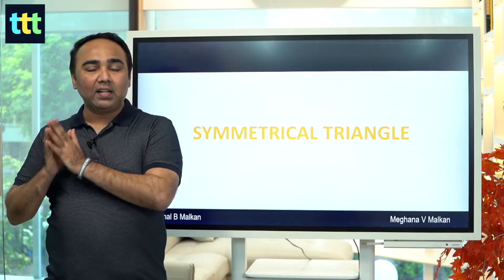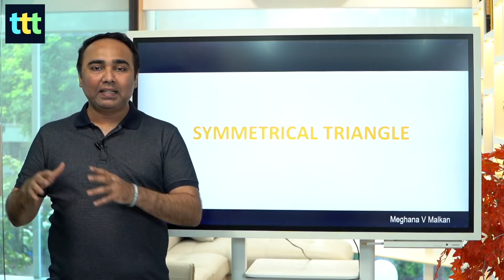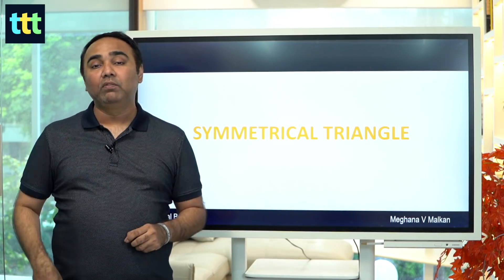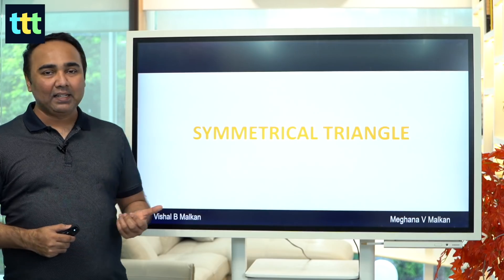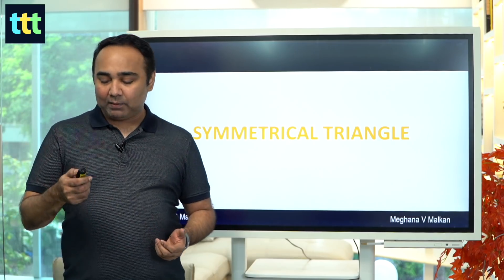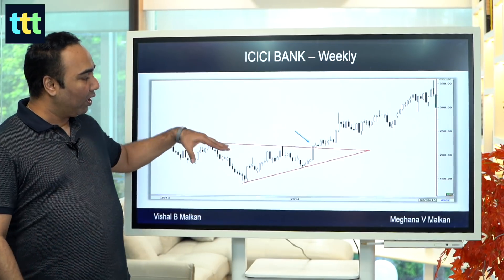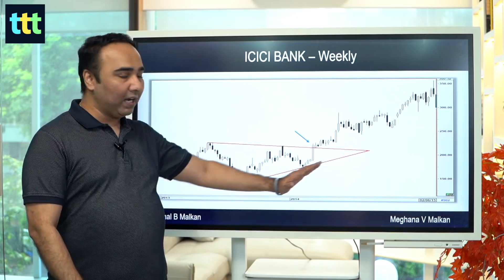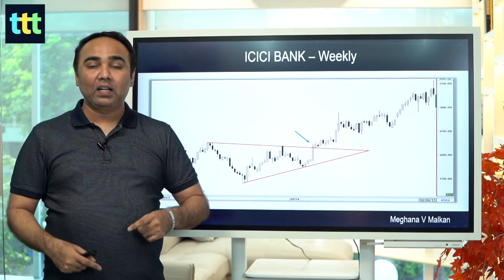So what are these triangles? Triangles are basically sideways movement — they are like a consolidation move. Let's first look at symmetrical triangle. What is a symmetrical triangle? When both your lines — one is going down and one is going up — that's your symmetrical triangle.